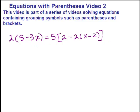So we begin solving equations by simplifying each side. On the left side, we have parentheses so we're going to do the distributive property. So that's our first step on the left side, to distribute that 2 so that we have 2 times 5 which is 10 minus 2 times 3x which is 6x.